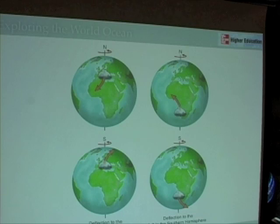This might be an easier one if we have a cloud that's moving towards the north. Then, as the earth turns underneath it, it looks like it's moved off towards the right. So we have deflection to the right in the northern hemisphere and deflection to the left in the southern hemisphere as the earth is rotating underneath it.